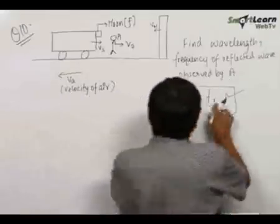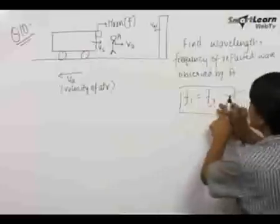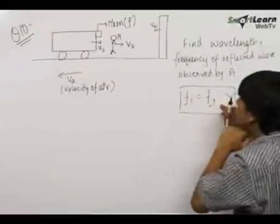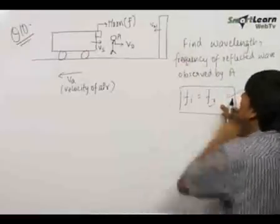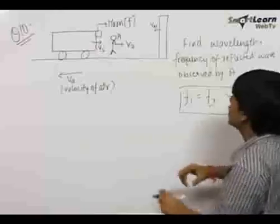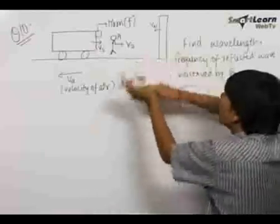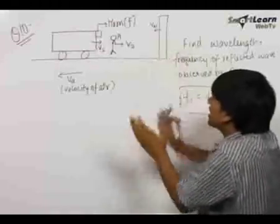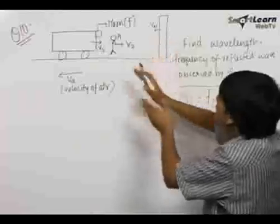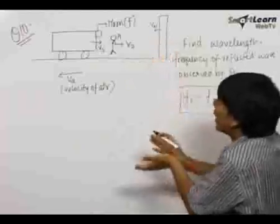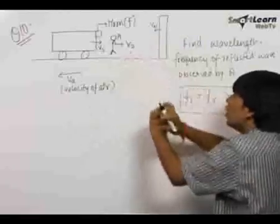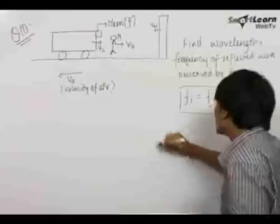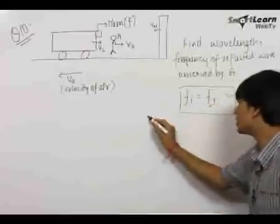To find the reflected frequency, we first find the frequency incident on the wall. The frequency incident on the wall equals the frequency observed by an observer if we treat the wall like an observer. So we find the frequency observed by the wall — that is the incident frequency Fi.